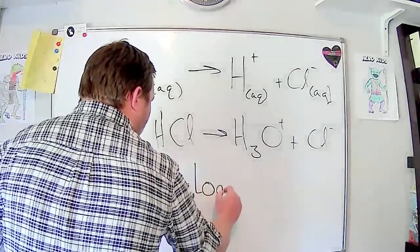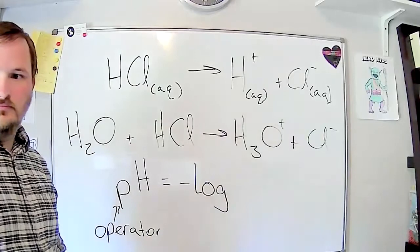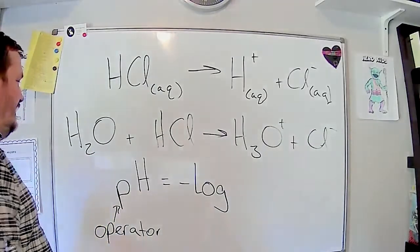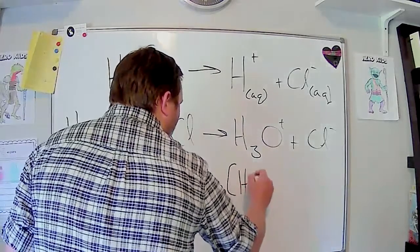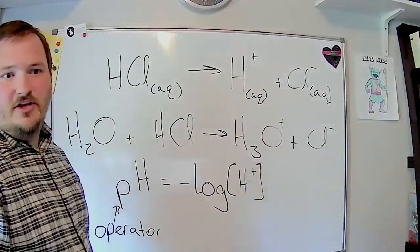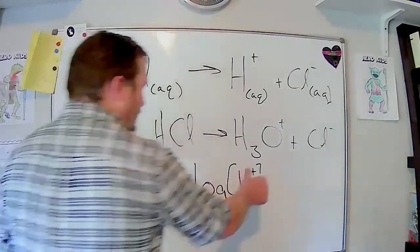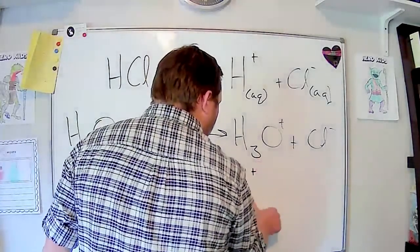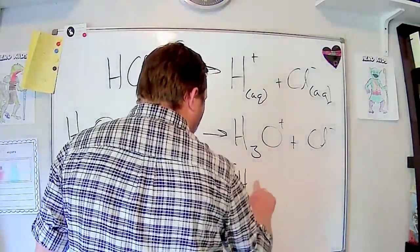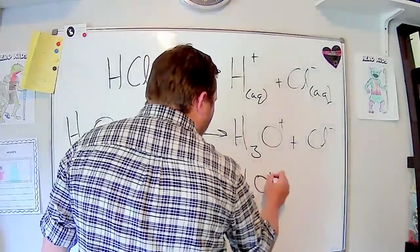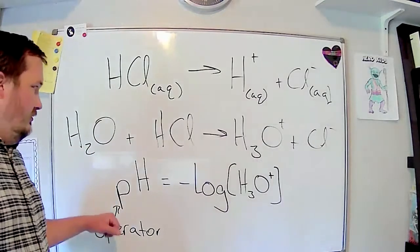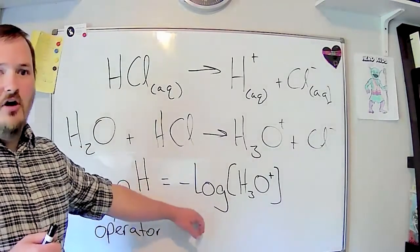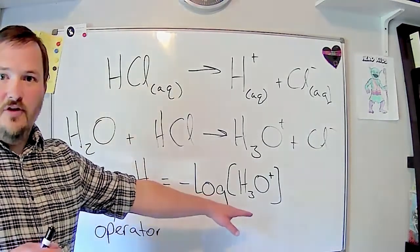In this case, this particular operator just means we take the log - we take the negative log of something. In this case we're talking about pH, it's the negative log of either the H+ concentration or the better way to write it is H3O+.